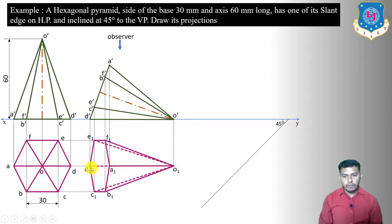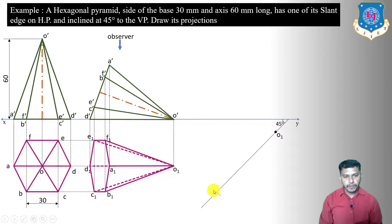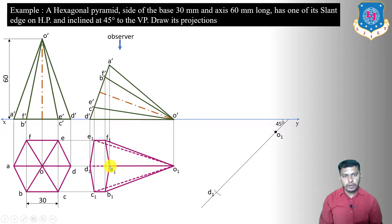Mark O1, then measure O1–D1 with the rounder, take center at O1, and give an arc to mark D1 on the 45-degree line. Measure O1–A1 and give an arc to get A1 on the same line.